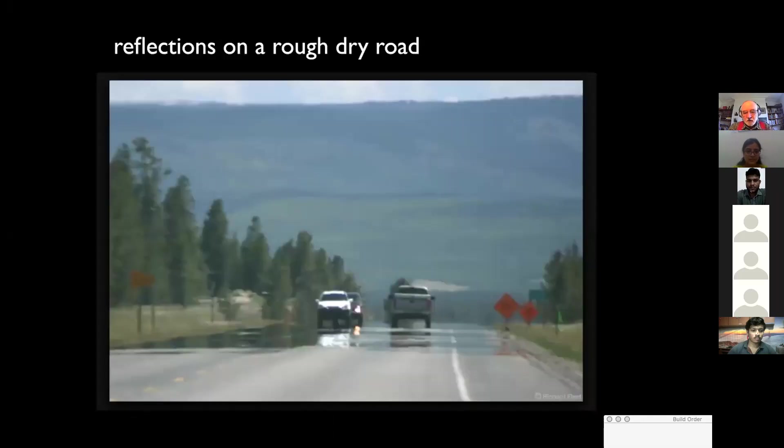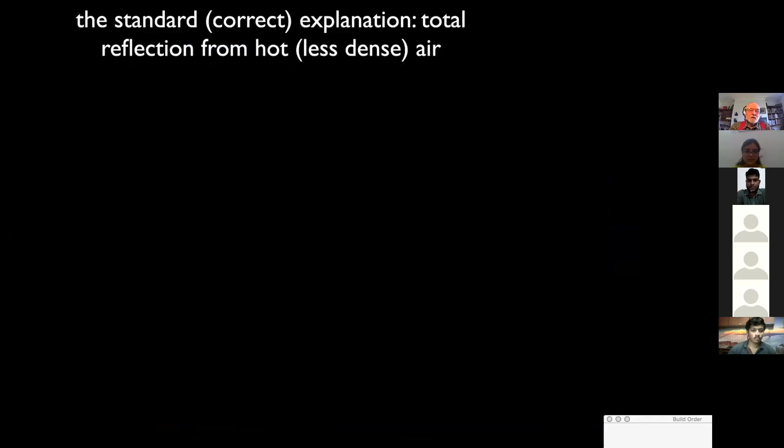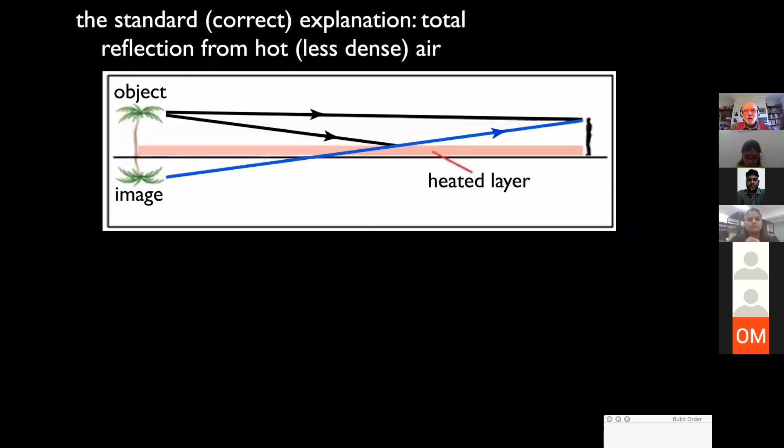It concerns mirages. You've all seen reflections on a rough, dry road on a hot day. It looks as though there's water on the road, but of course there is not. The standard explanation, which is correct, is that this is total reflection from the hot air, which is less dense, the hot air near the road.